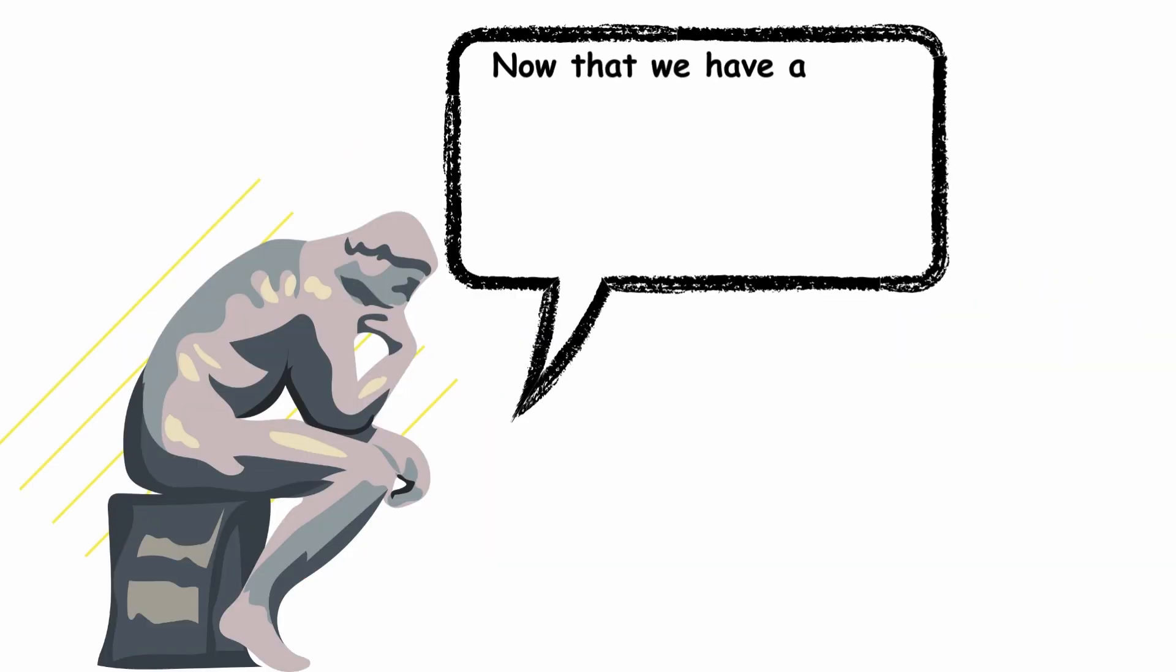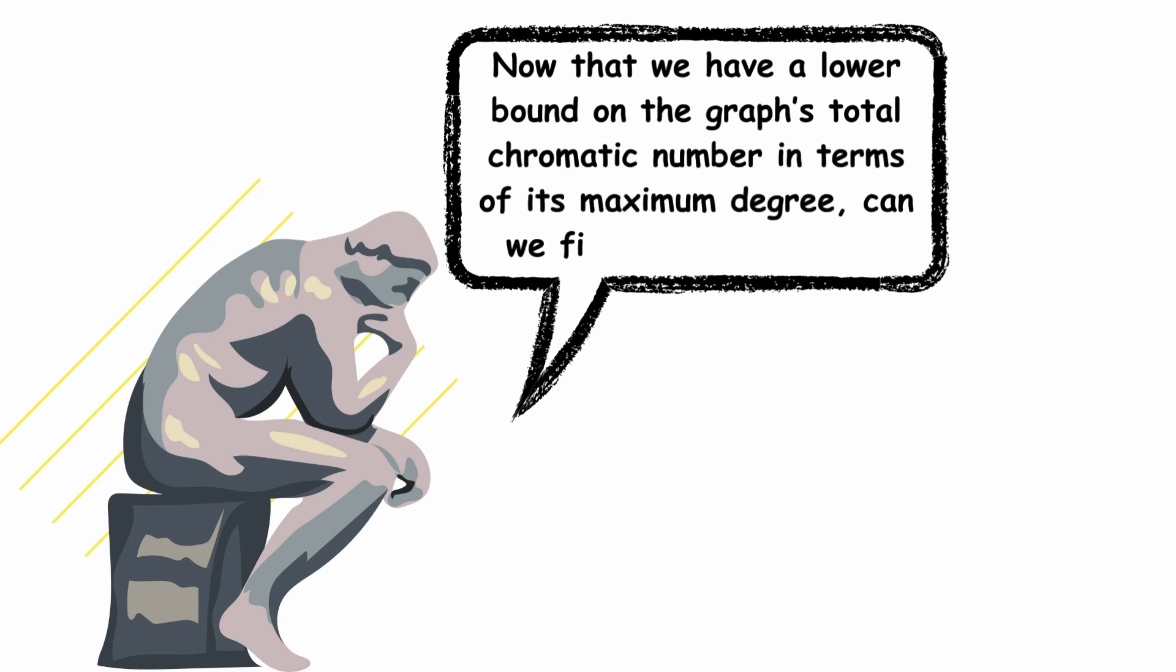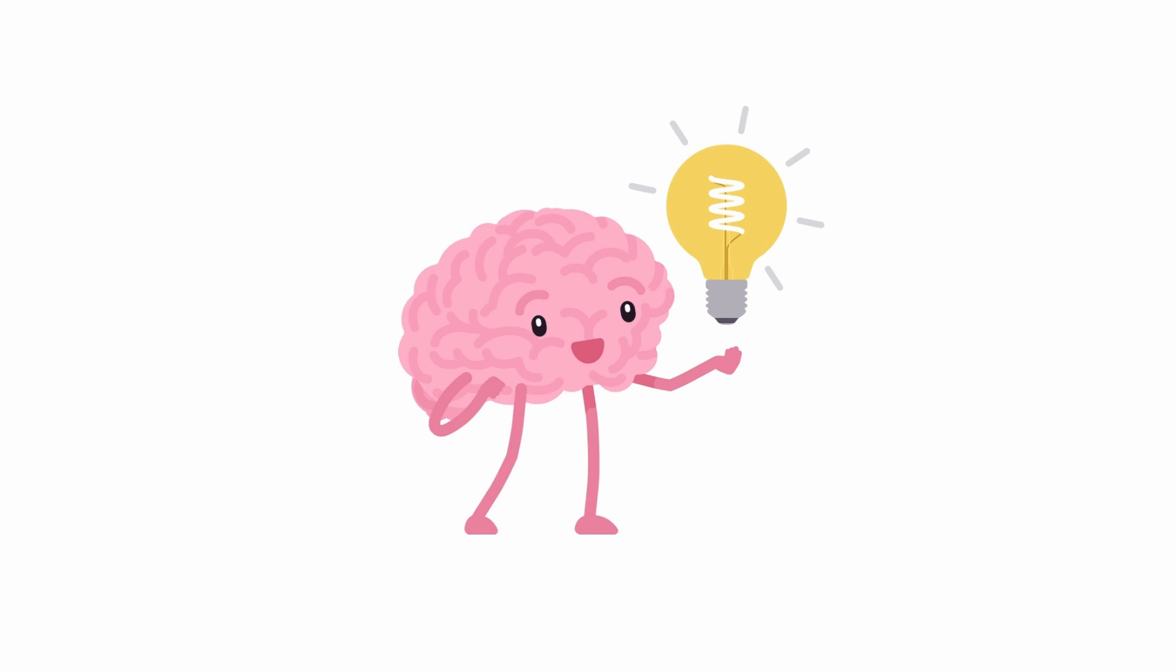Now that we have a lower bound on the graph's total chromatic number in terms of its maximum degree, can we find an upper bound? Well, we do have a guess for one.